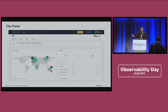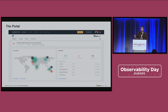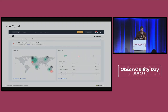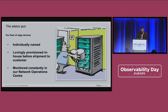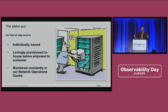Just to give you an idea of how this can look, this is what a customer might see when they log into the portal. You get an overview of where your hosts are around the world, and you've got a lot of metrics that you can drill into. The start of the journey is that our fleet of edge devices are lovingly provisioned in a workshop before they are delivered to our customers. They're individually named — they're really pets, which we send off into the world and we hope they're looked after.